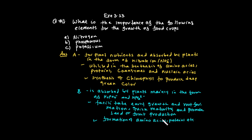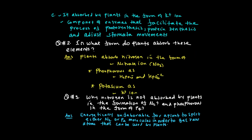Phosphorus also aids in the formation of amino acids, proteins, and seeds. Potassium is a component of enzymes that facilitates photosynthesis, protein synthesis, and stomatal movement. Plants absorb nitrogen in the form of nitrate ions, phosphorus in the form of phosphate ions, and potassium in the form of potassium ions.